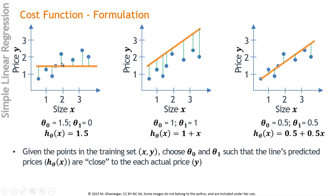Here you can see a negative distance, negative distance, positive distance. Here you can see all these distances are negative. This prediction is actually very bad because the prediction for this particular size would be way up here above 3, but in fact the actual price is below 2 — so this is a very poor prediction. Here you can see the dotted lines are very short, meaning the errors are small, which indicates a good fit. Some of these errors are positive and some are negative.